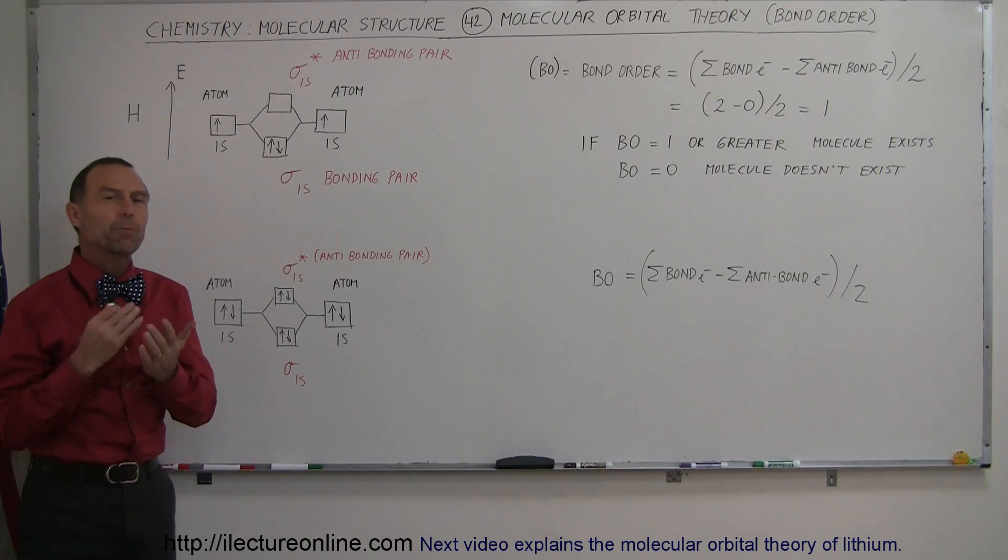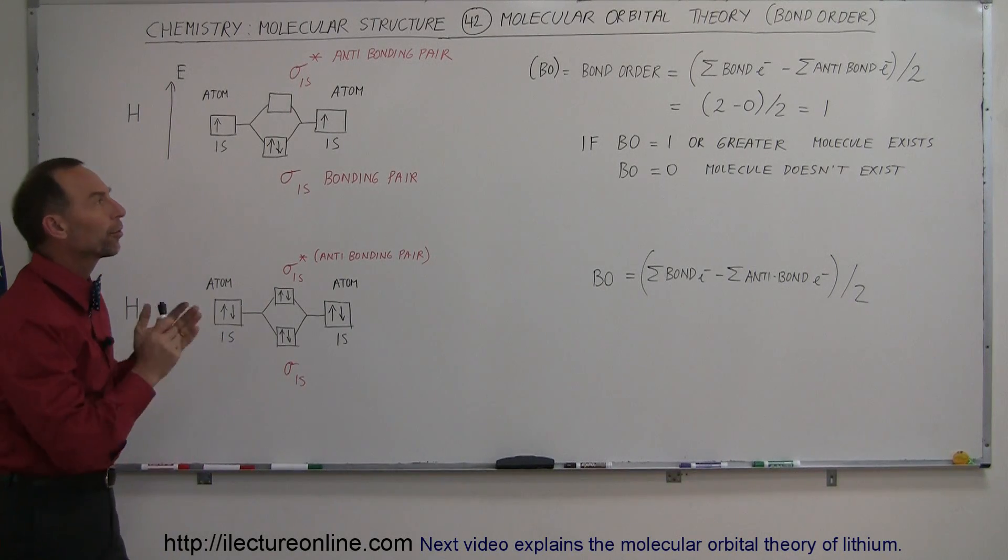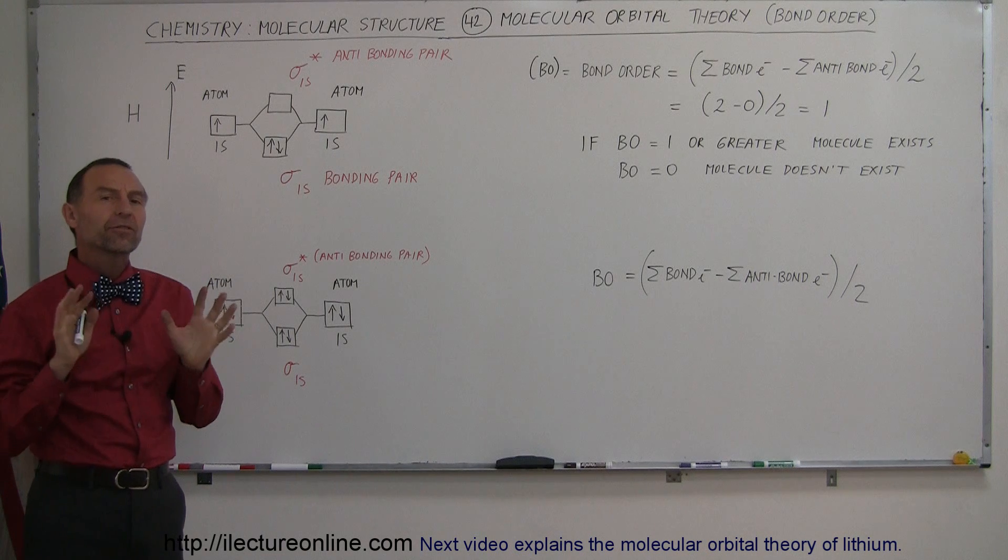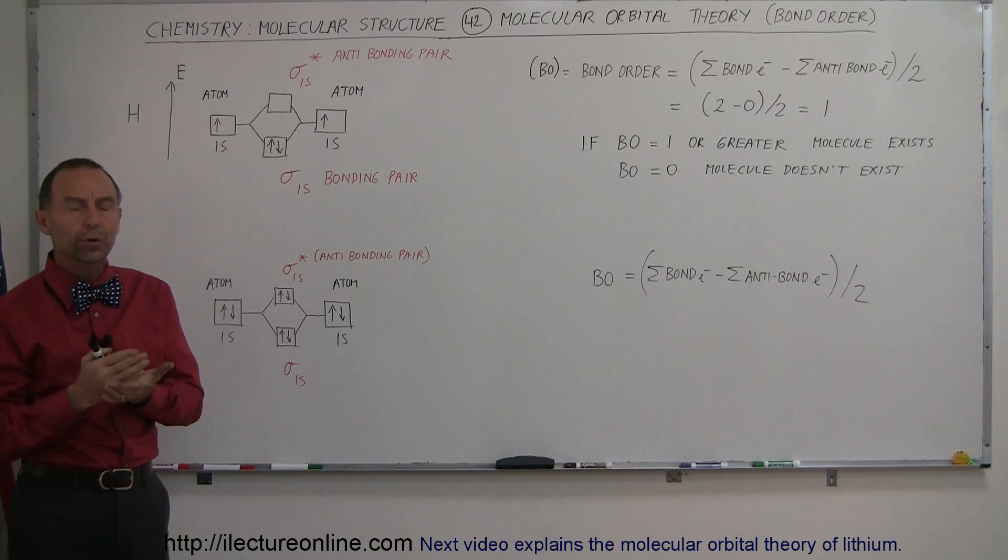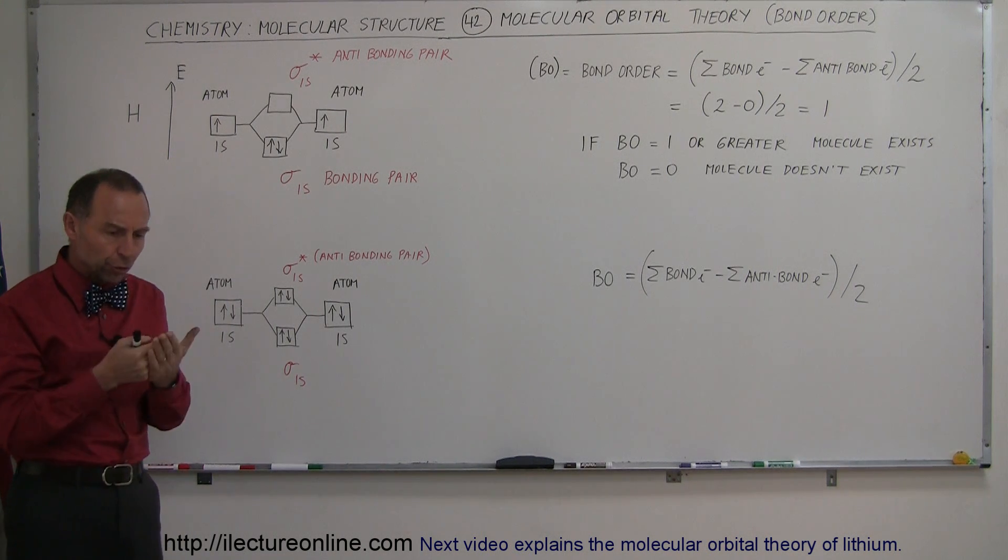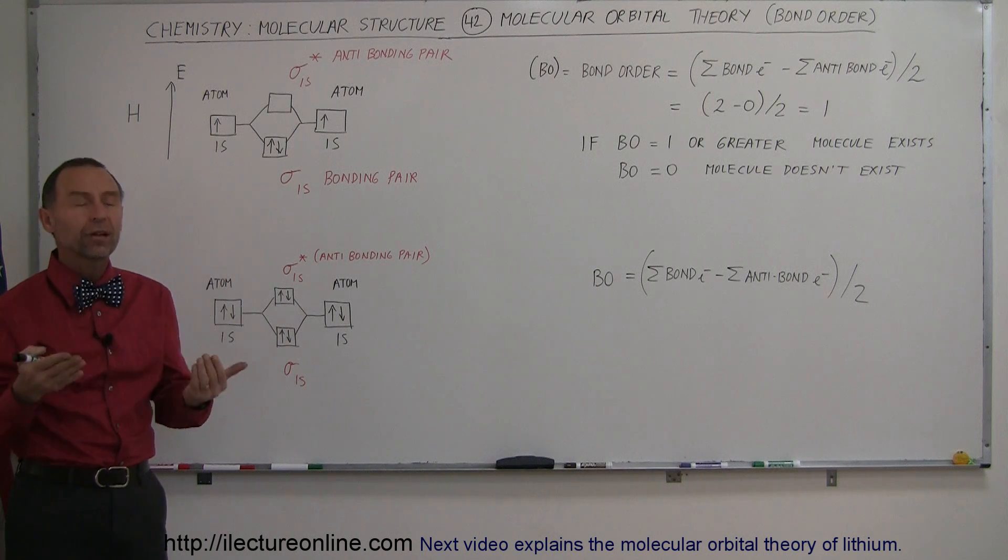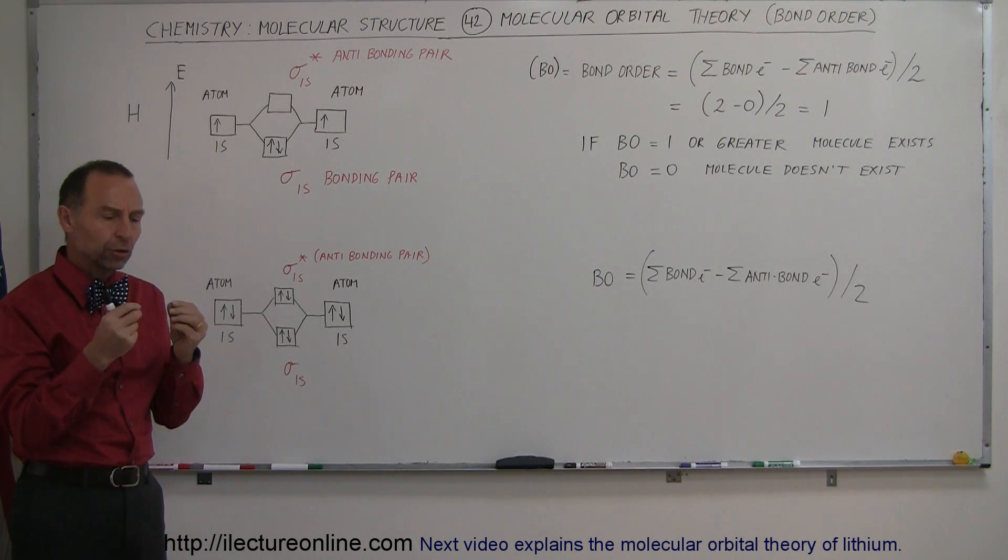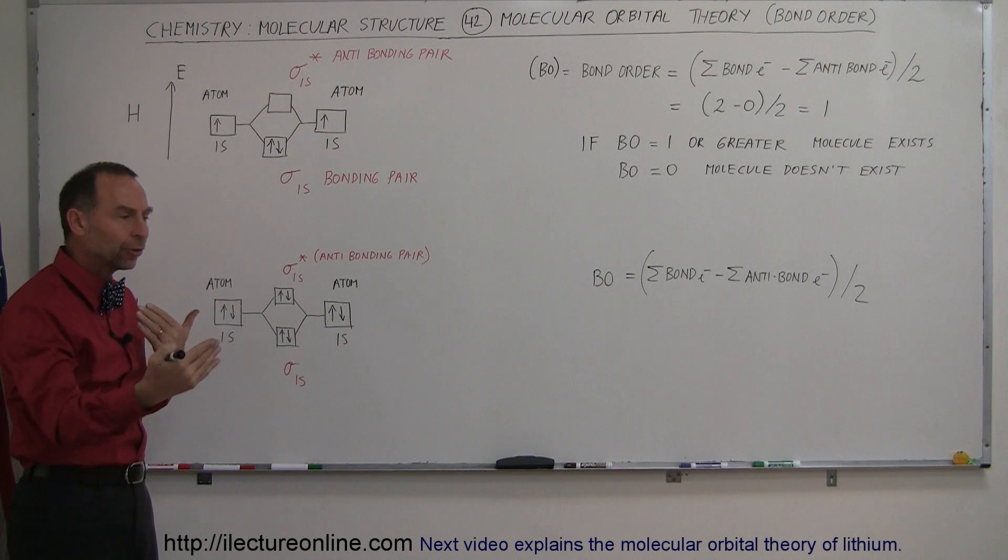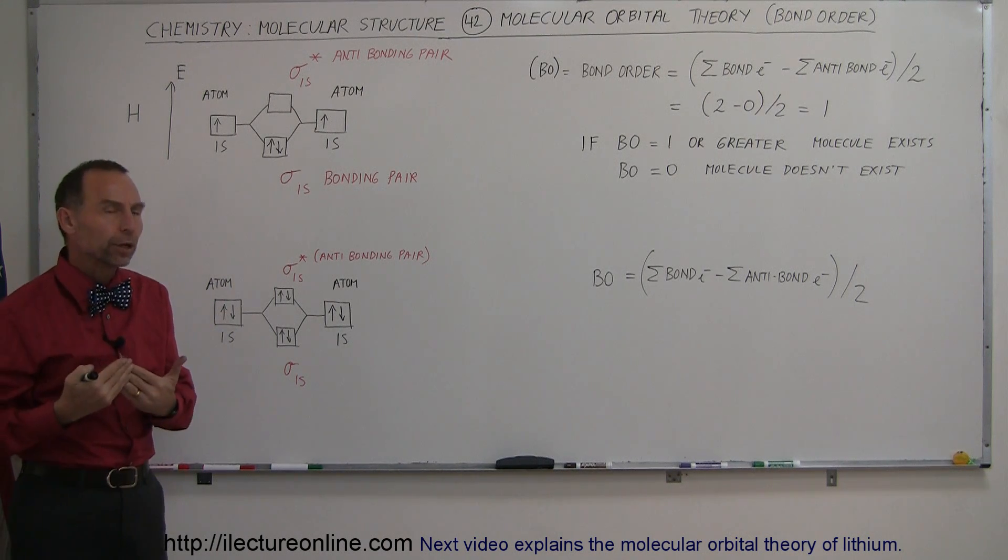Now we're going to take a look at something called the molecular orbital theory and it involves a concept called the bond order. For us to be able to determine if a molecule can exist or not, we're going to take a close look at which electrons are available and how those electrons will interact with one another.